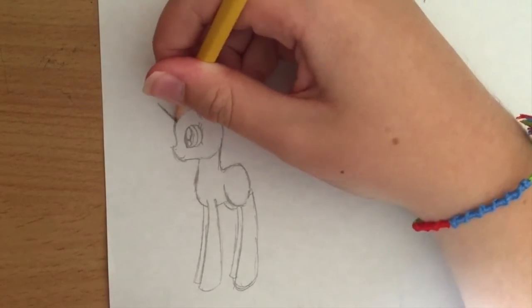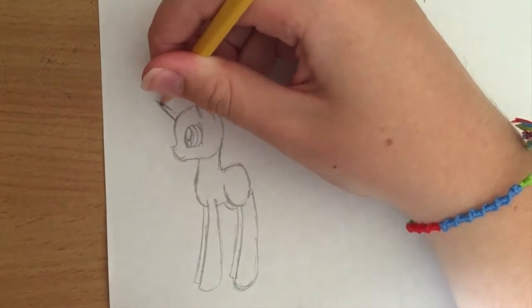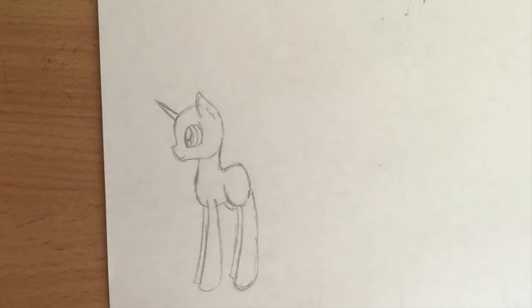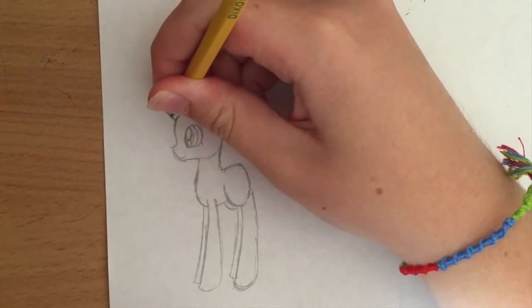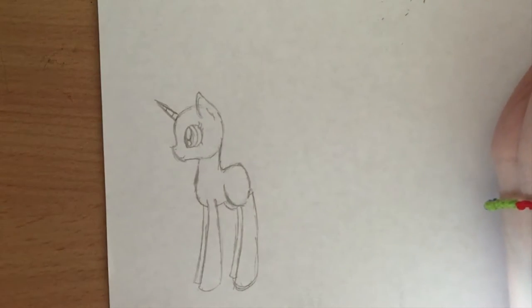So you want to make a thin triangle pointing slightly upwards, and don't make it too thick, just like that. And then you can put in little lines to show the spirals of the horn.